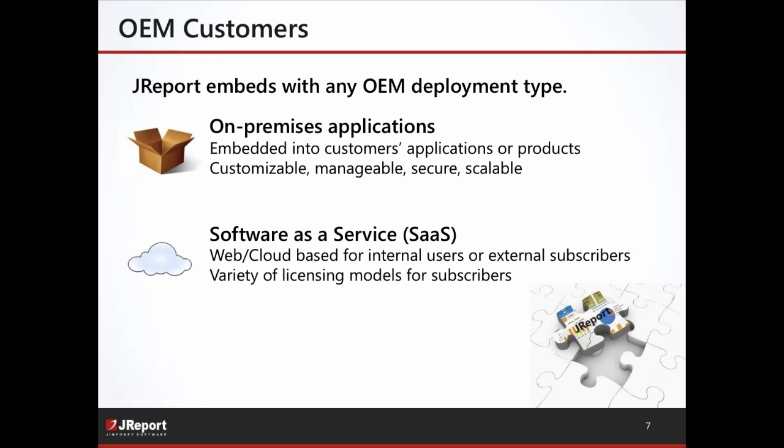The typical folks who embed data visualization are predominantly OEM customers and ISVs — companies that sell software needing a reporting capability within it. JReport embeds into any OEM deployment type, whether on-premise applications, software-as-a-service, or cloud applications. It's important to have a licensing model that fits with the customer's SaaS or on-prem licensing models. JReport provides access to reports and dashboards for internal users or external subscribers.